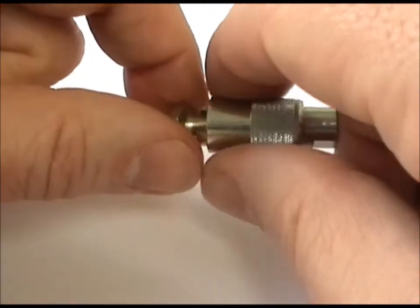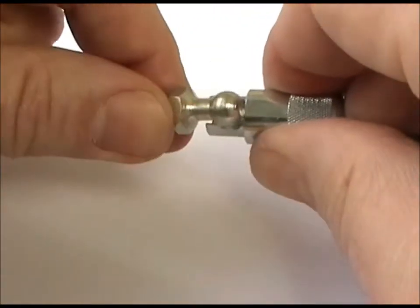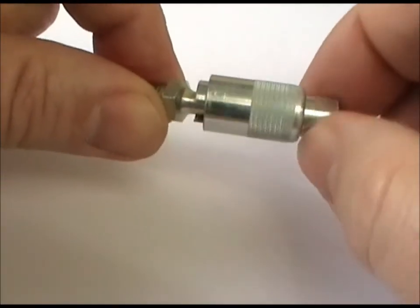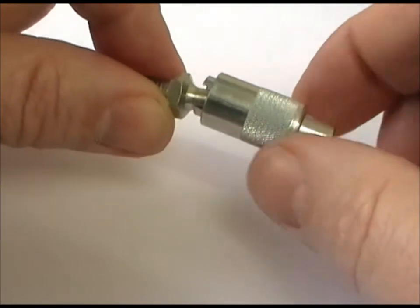The shell is knurled, so you can grip it with greasy fingers, and we'll have these available on eBay or if you just want to contact us directly.